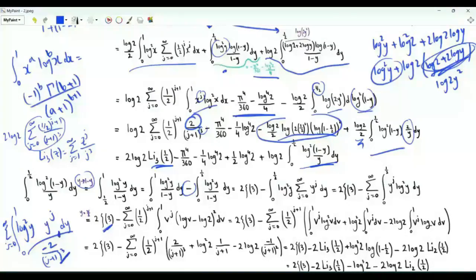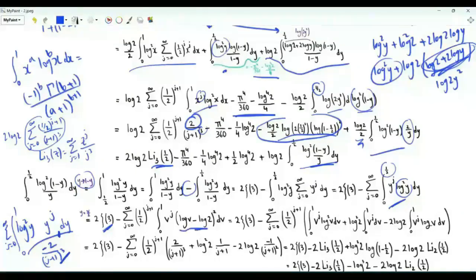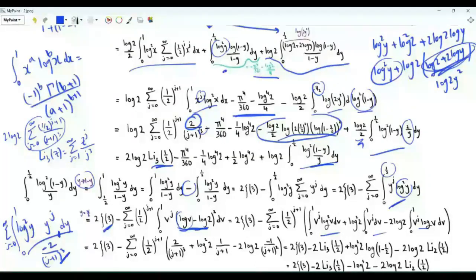We have another integral of the same form but to 1/2. For that integral, use the substitution y = v/2: when y is 0, v is 0; when y is 1/2, v is 1; and y^j becomes v^j/2^j. Log²y becomes (log(v) - log(2))². We expand the square and split into three integrals: one with log²v, one with log²2, and one with -2 log(2) log(v). We use the earlier result to evaluate these, which involves the dilogarithm Li₂(1/2) = π²/12 - ½ log²(2).